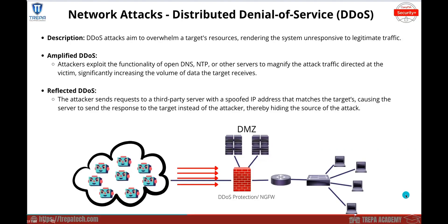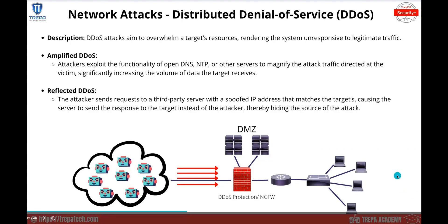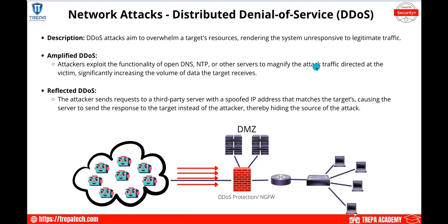Let's go over different types of network attacks in our domain 2.4 section. The first network attack we're going to cover is a distributed denial of service attack. A DDoS attack aims to overwhelm a target's resources — this could be a TCP resource, an API resource, DNS, or really anything — any sort of service or function running on the target device.